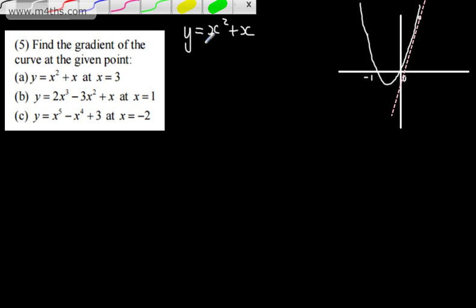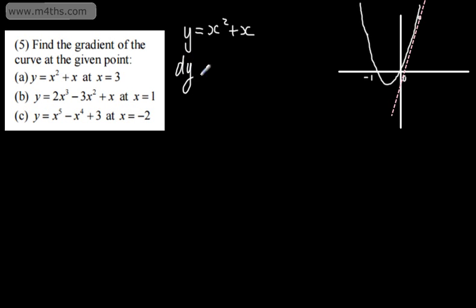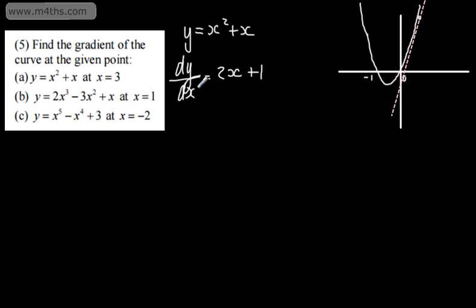So the gradient function is dy by dx. All I'm going to do is differentiate both sides of this equation with respect to x. On the left I'll have dy by dx, and in simplified form we're going to have 2x plus 1. If that doesn't mean anything to you, please go back and watch the videos prior to this, as I've done that fairly quickly.